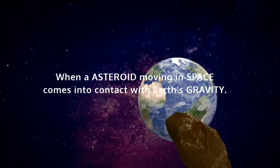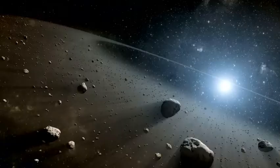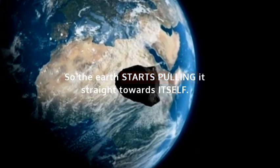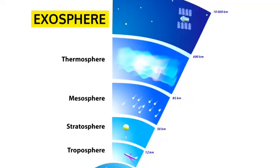When an asteroid moving in space comes into contact with Earth's gravity, the Earth starts pulling it towards itself, and the asteroid enters the exosphere, the first layer of Earth's atmosphere.